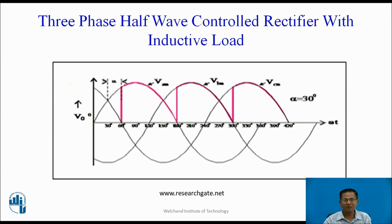These are the waveforms for alpha equal to 30 degree. Again, for alpha equal to 30 degree, the load current flows through the converter continuously. That is why the mode is again continuous conduction mode.